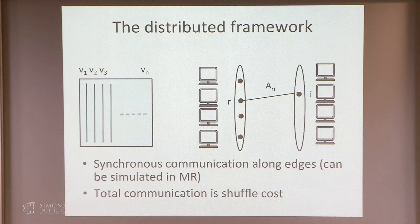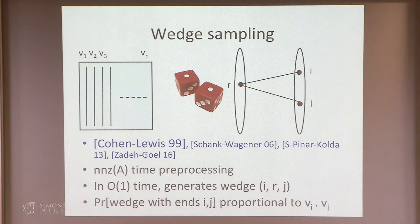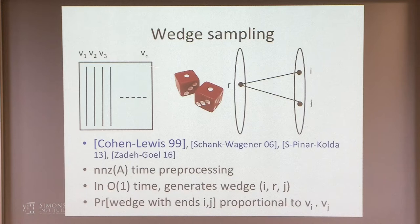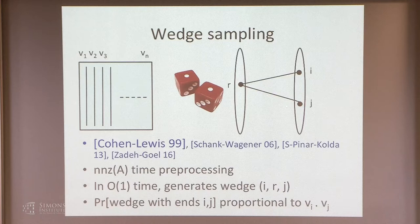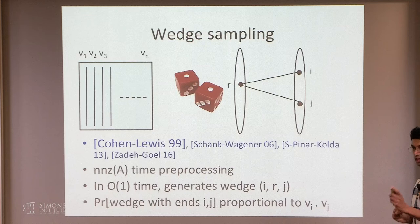Let me tell you about a method called wedge sampling, invented by Cohen and Lewis and rediscovered in several subsequent works. It's a neat algorithm: given matrix A, you do linear-time preprocessing to build a randomized data structure. Then in O(1) time, it generates a wedge — a path of length two in the bipartite graph. The guarantee is that the probability that i and j are the endpoints is proportional to the dot product of v_i and v_j. So in linear time you build this data structure, push a button, and get a path of length two at random, with endpoint probability proportional to v_i · v_j. This requires non-negative entries.